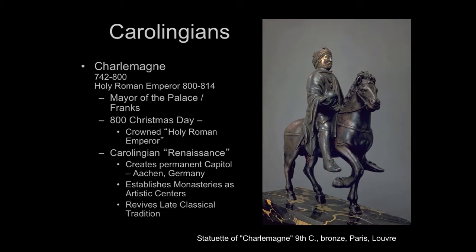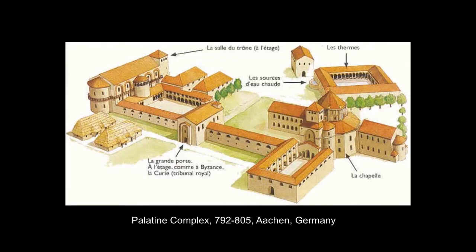From this point onward in the Middle Ages, we see an attempt to reclaim the classical past, classical art, and classical institutions. You can see this in everything Charlemagne does: he creates a permanent capital, establishes monasteries as artistic centers, and revives late classical tradition. In addition to reviving iconography such as the equestrian portrait, he builds an actual palace — which may seem obvious, but the Frankish kings up to that point did not live in palaces. The Merovingian kings lived in tents and traveled from place to place.